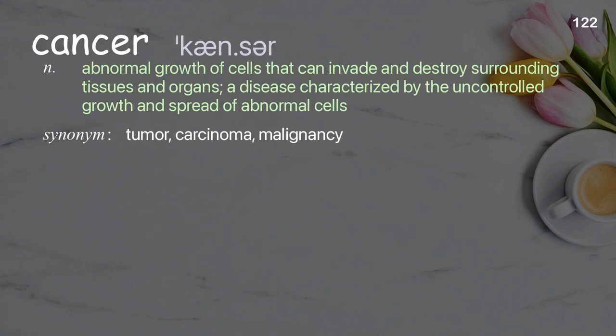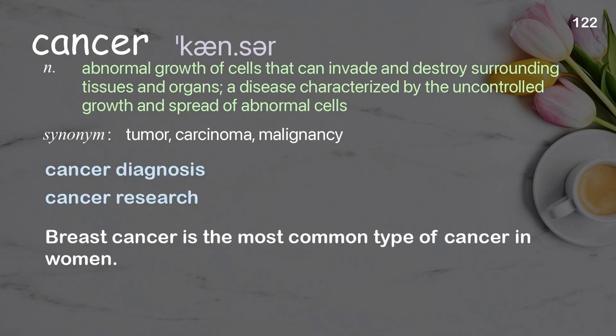Cancer: Abnormal growth of cells that can invade and destroy surrounding tissues and organs; a disease characterized by the uncontrolled growth and spread of abnormal cells. Examples: Cancer diagnosis. Cancer research. Breast cancer is the most common type of cancer in women.